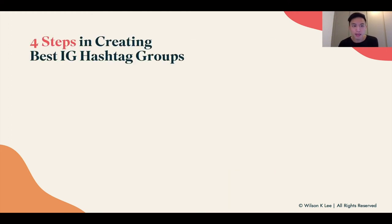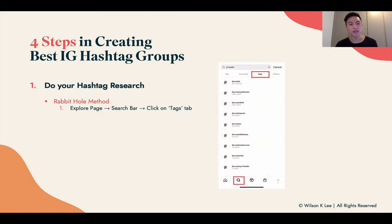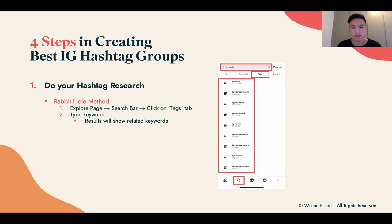The four steps in creating the best Instagram hashtag groups. First, do your hashtag research — this is the thing that most people trip up on. I'm going to introduce you to the rabbit hole method. On your explore page of your Instagram account, click on the search bar at the top and click on the tags tab — you can see that we have highlighted these in red squares. Type in a keyword specific to your location and what you want to sell. For us, YVR eats is the one we chose, and you'll see a bunch of related keywords pop up as well.